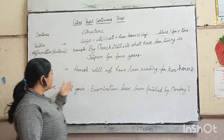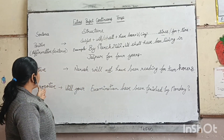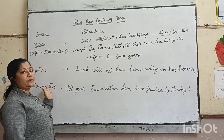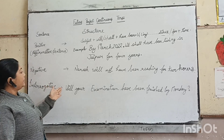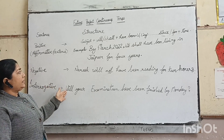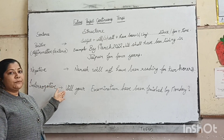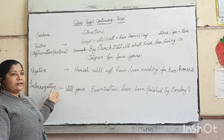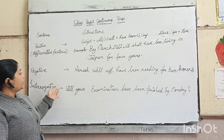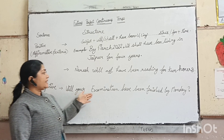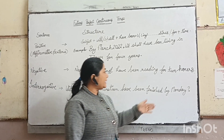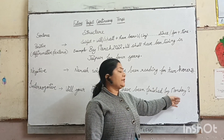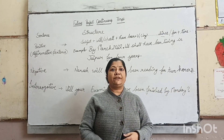Next is interrogative sentence — prashnavaachak vaakye. Will or shall auxiliary verbs hain, yeh aage aa jaati hain. Example: Will your examination have been finished by Monday? Sign of interrogation.